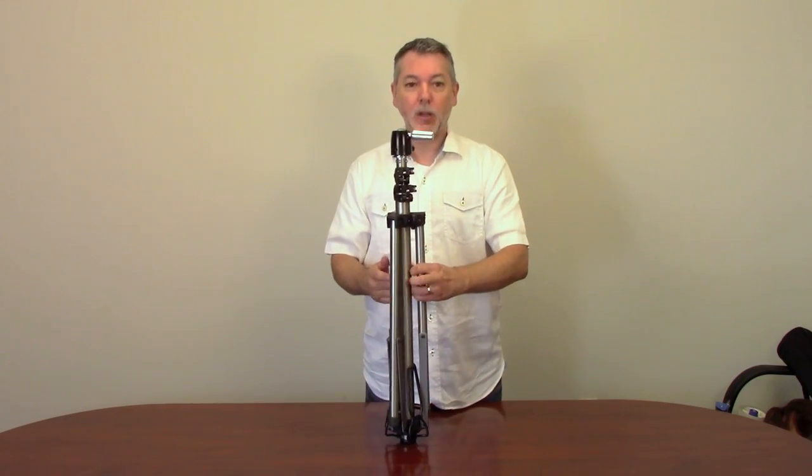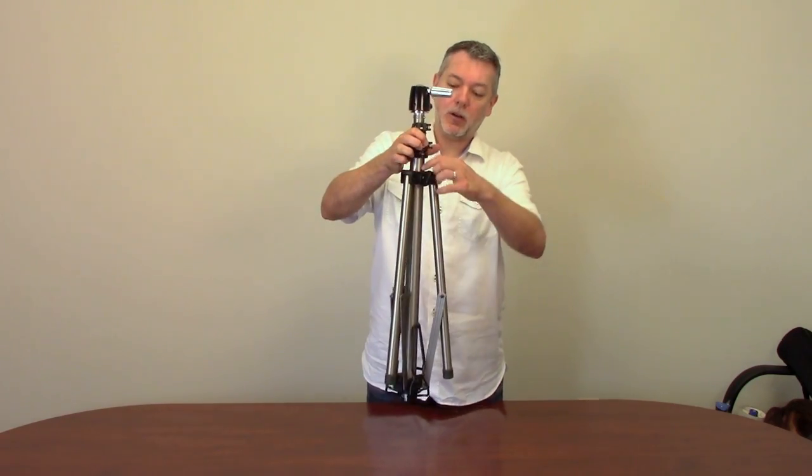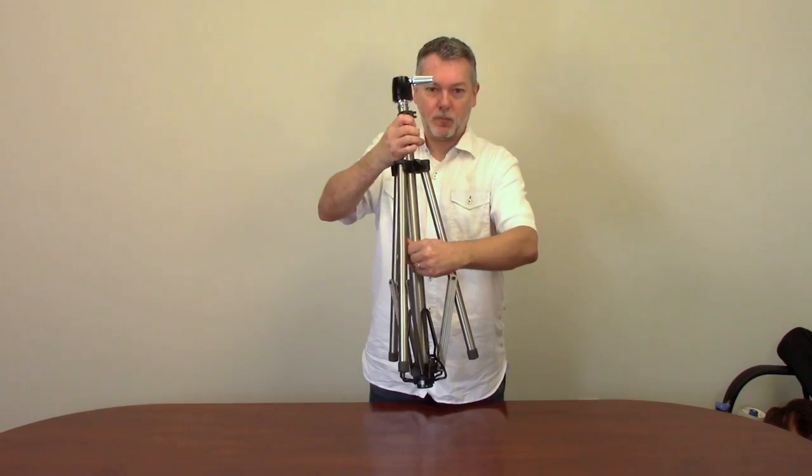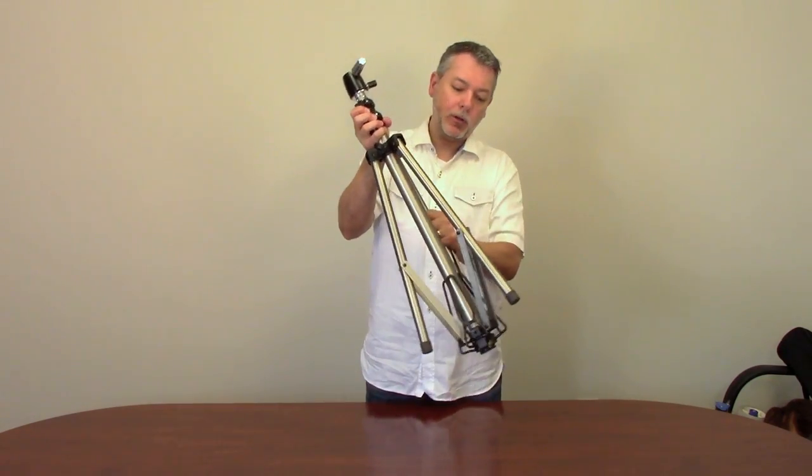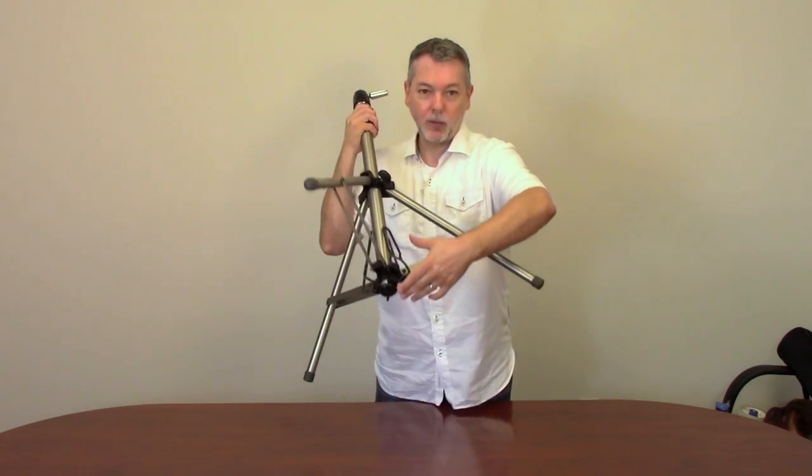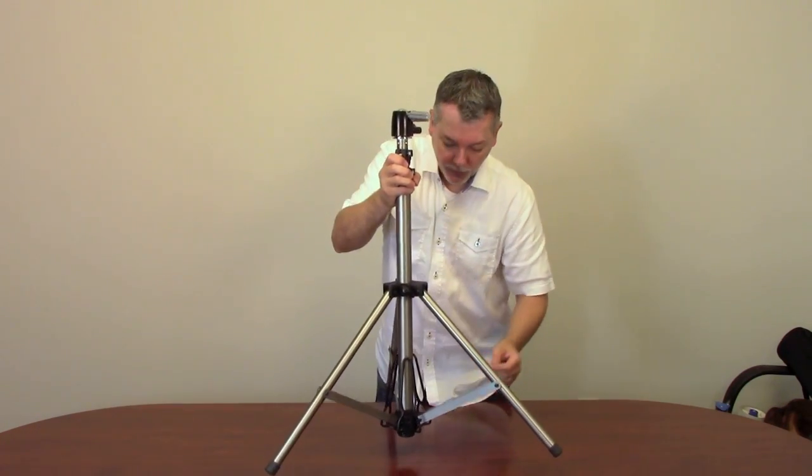You just take the legs slightly apart and then push down on this middle portion here. You want to do that until the tripod bottom portion is actually about two inches from the ground.